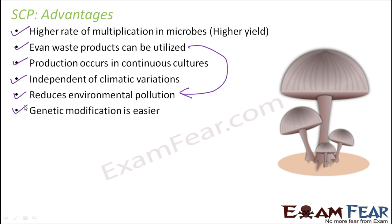Genetic modification is also easier in the case of SCP. What we need to do is just change the amino acid composition, so genetic modification is all the more easier in case of SCP. These are some of the advantages of SCP, and that is why SCP is a very demanding technique at present — not only because of all these advantages, but also because microbes have now become another source of food for people, beyond just plants and animals.